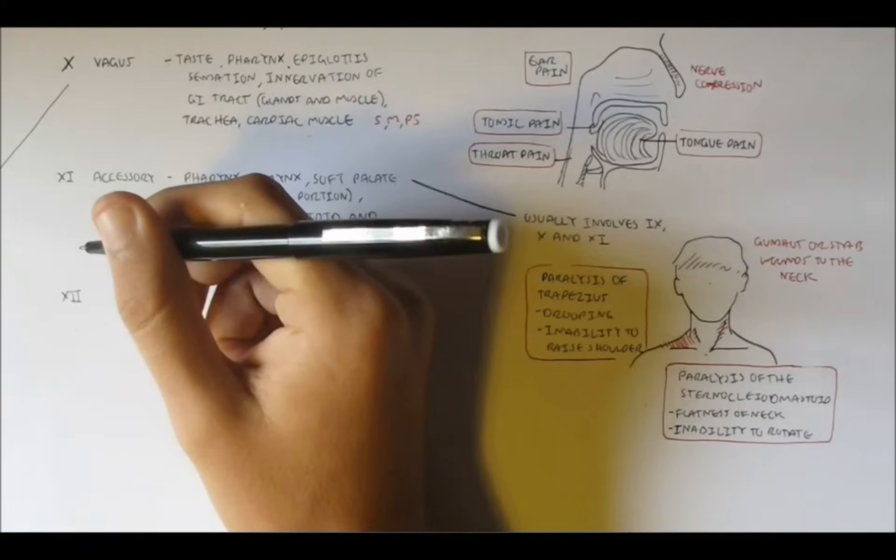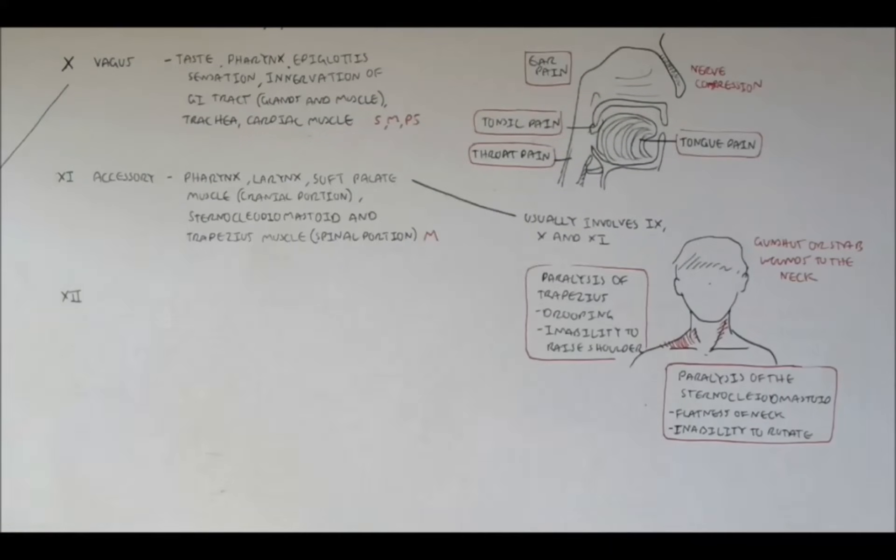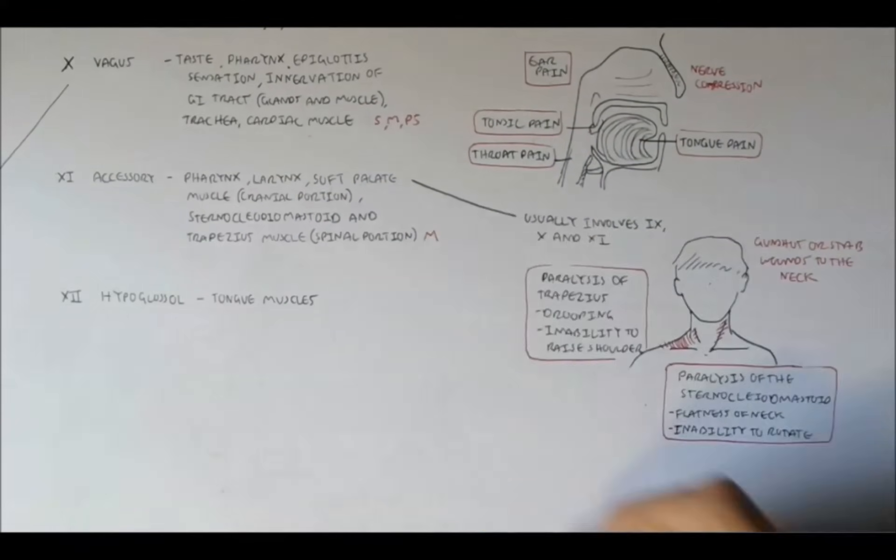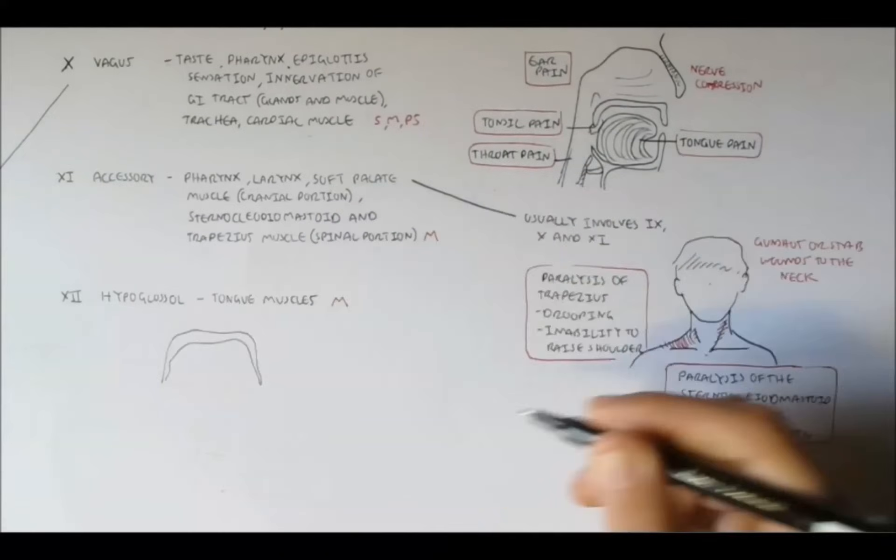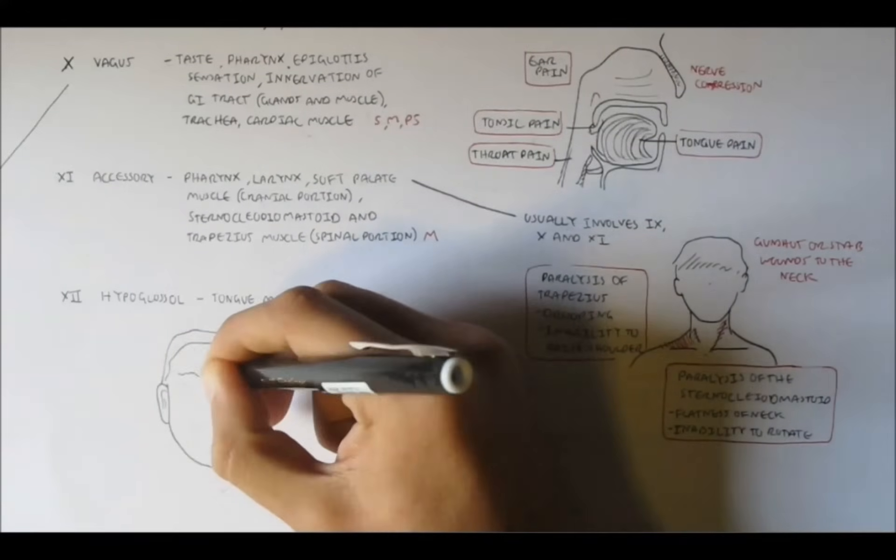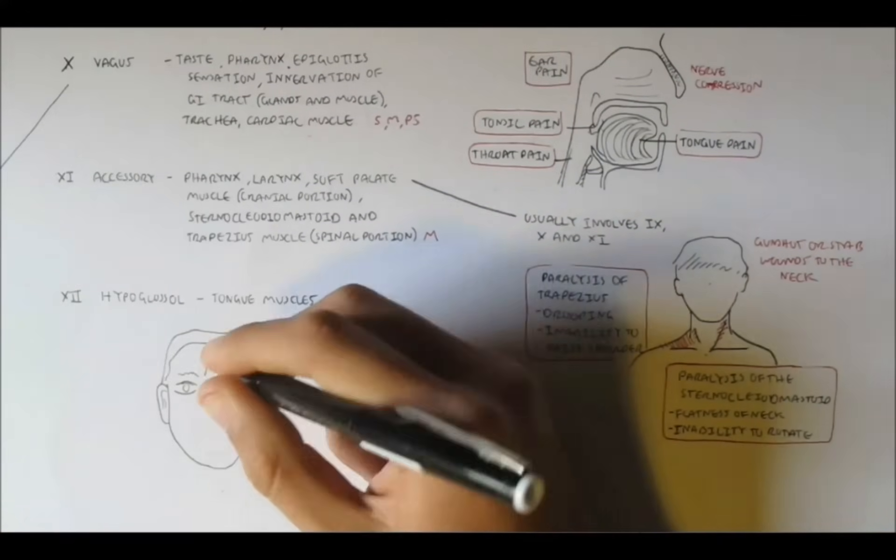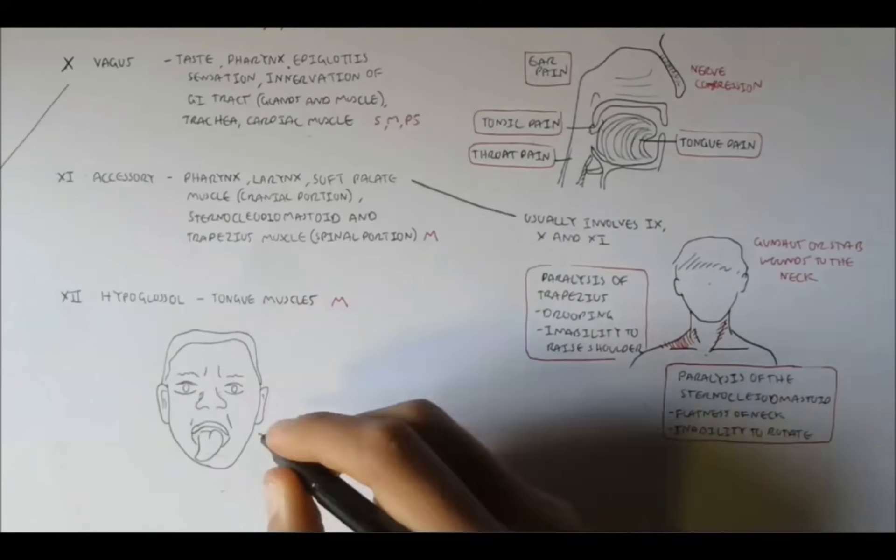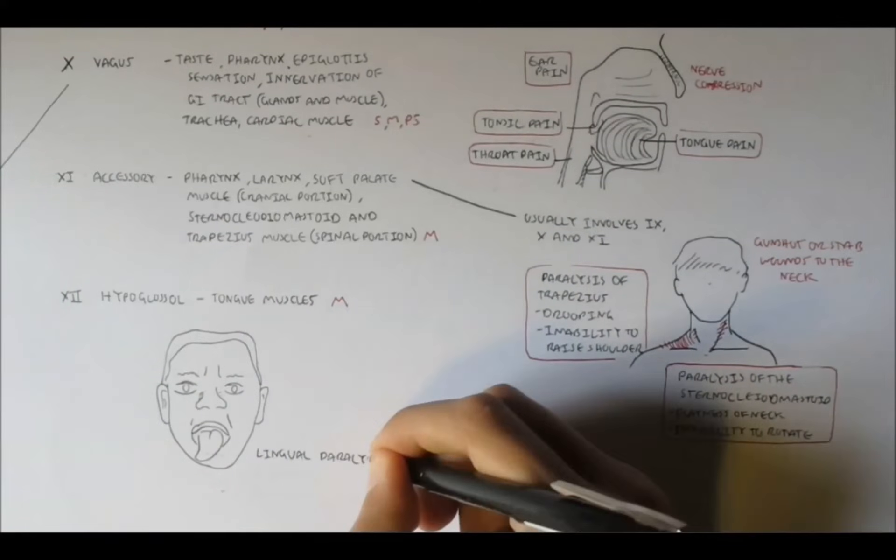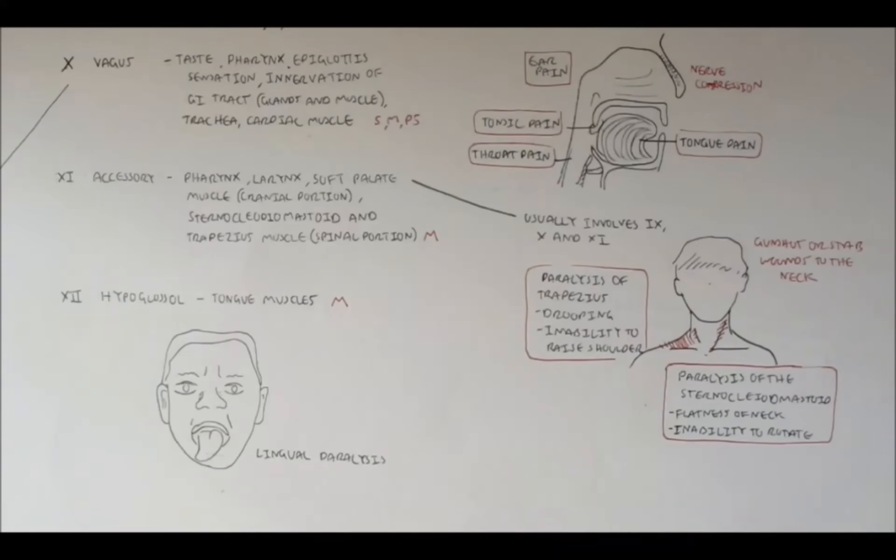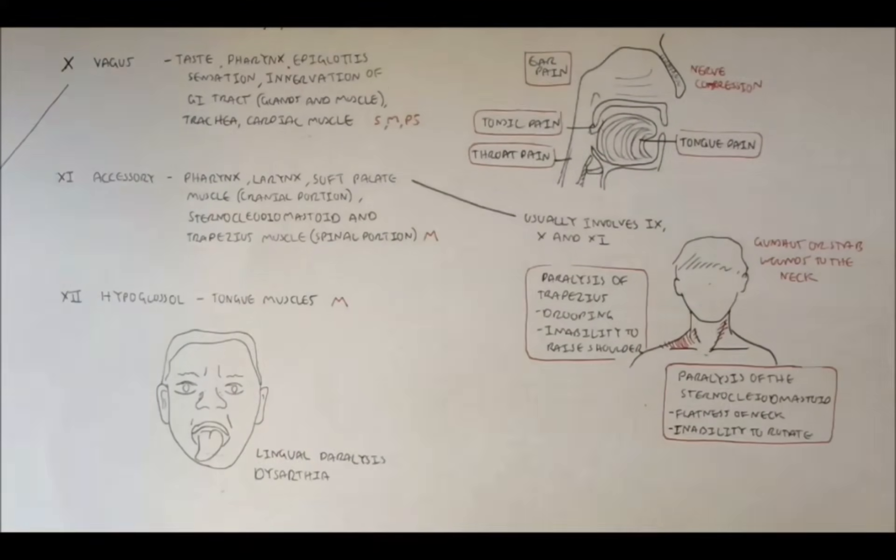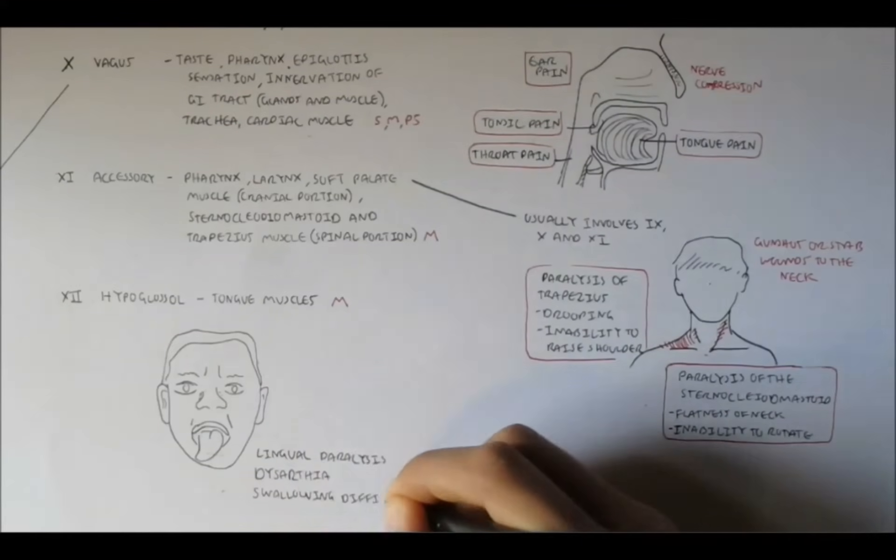The last nerve is nerve 12, and it's called the hypoglossal nerve. Hypo, as in below. So hypoglossal, as in the nerve below the glossopharyngeal nerve, if that helps you remember. The hypoglossal nerve is a motor nerve controlling the muscles of the tongue. Damage to this nerve can cause lingual paralysis, which is tongue paralysis, dysarthria, which is speech disorder, and also swallowing difficulties because the tongue is paralyzed.